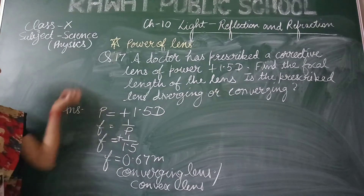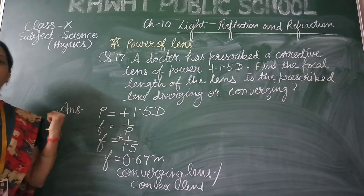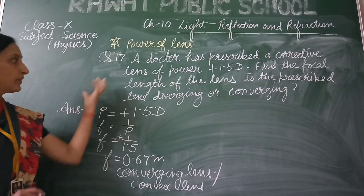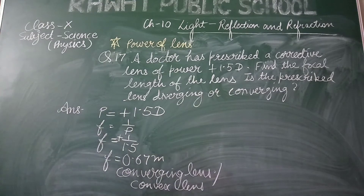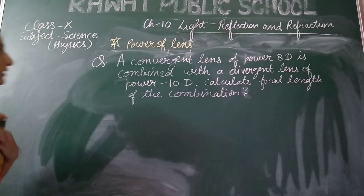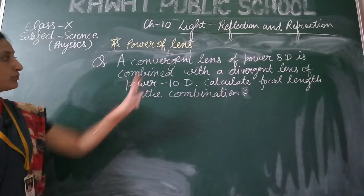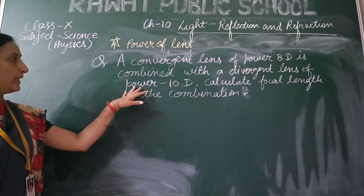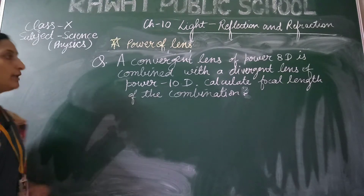Let's do one question which is not given in your exercise. For our practice, we are doing a question based on the combination of lenses. A convergent lens of power 8 diopter is combined with a divergent lens of power minus 10 diopter. Calculate the focal length of the combination.